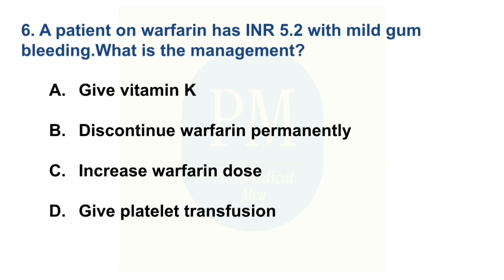A patient on warfarin has INR 5.2 with mild gum bleeding. What is the management? Option A: give vitamin K. Option B: discontinue warfarin permanently. Option C: increase warfarin dose. Option D: give platelet transfusion. The correct option is Option A: give vitamin K.